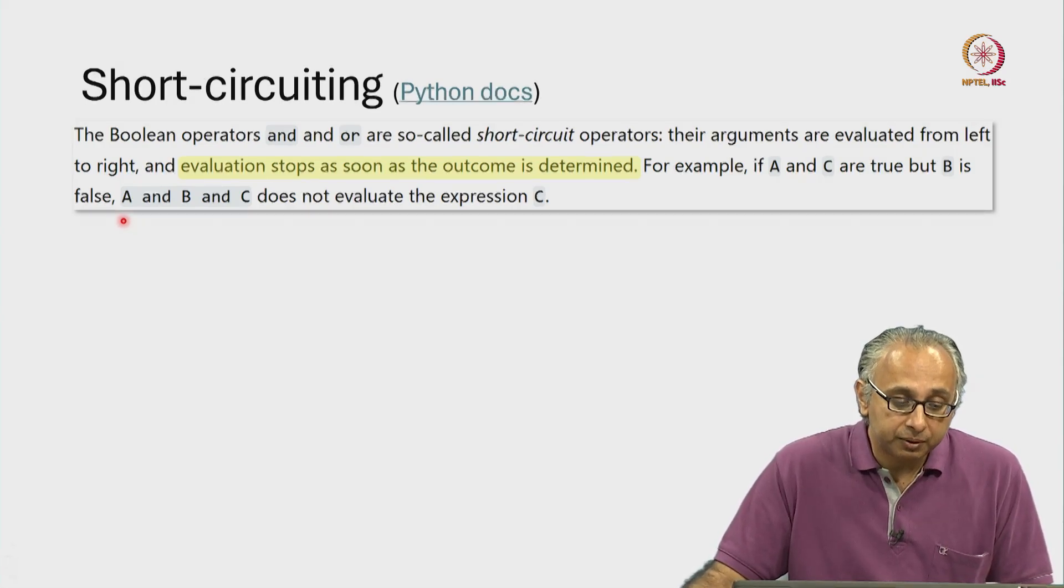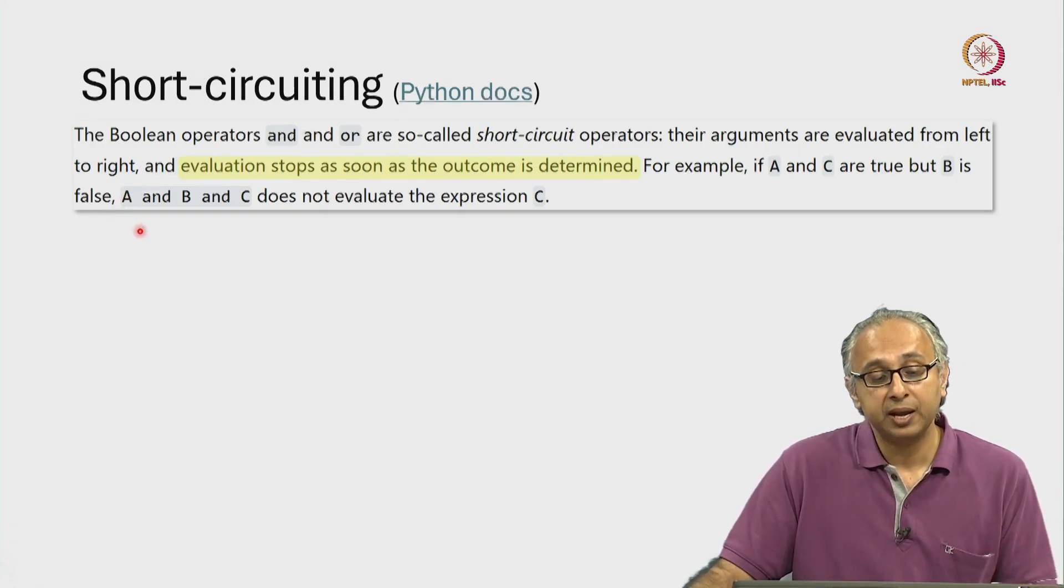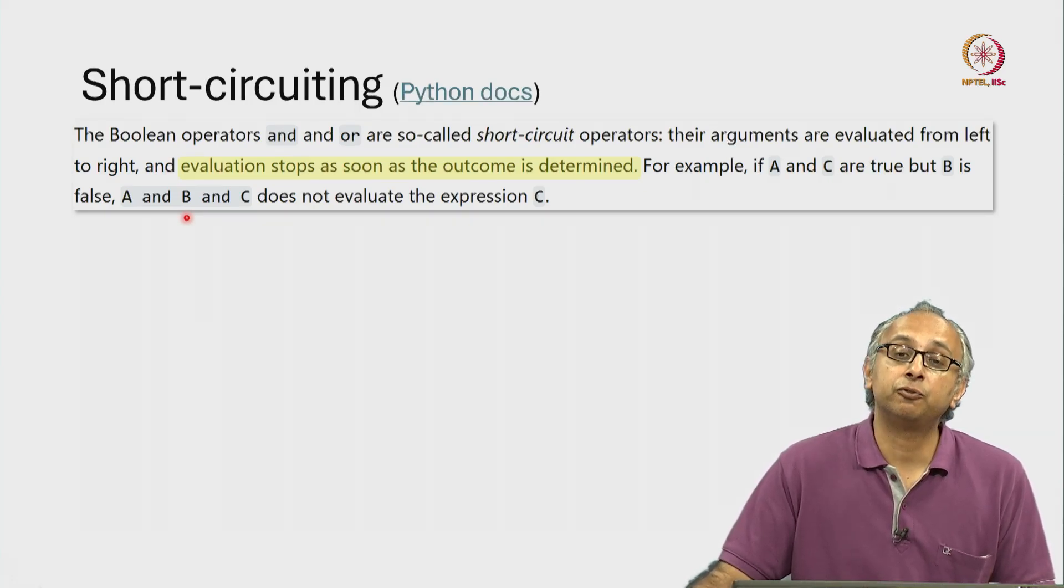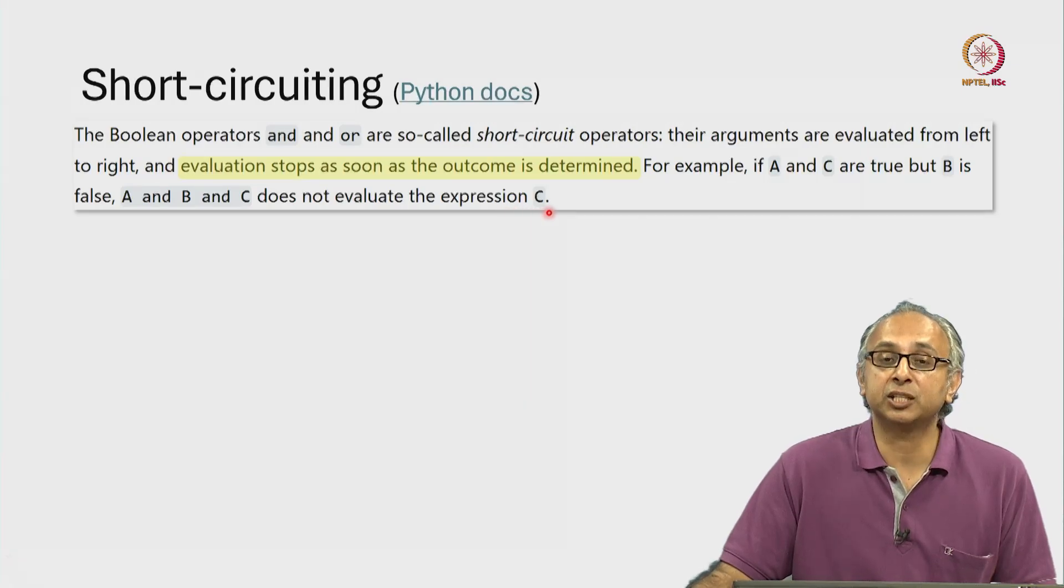Well, remember it says we have to evaluate left to right. So it will first evaluate A, it will find that that is true. Then it will evaluate B and find that it is false.